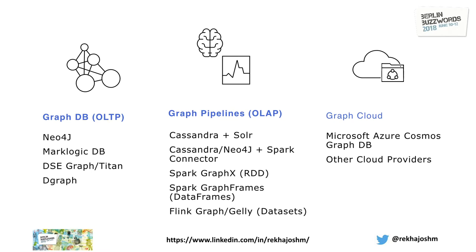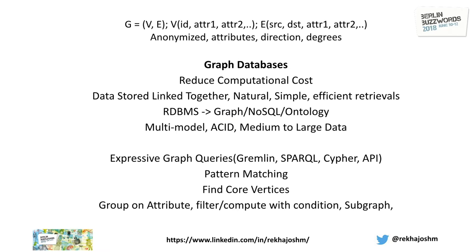You have Graph Cloud — Microsoft Azure Cosmos DB — which does all the things mentioned here, but it also gives you fault tolerance and everything you need in a cloud interface. There are other cloud providers as well, and they also have mechanisms where they try to develop the graph database on cloud.